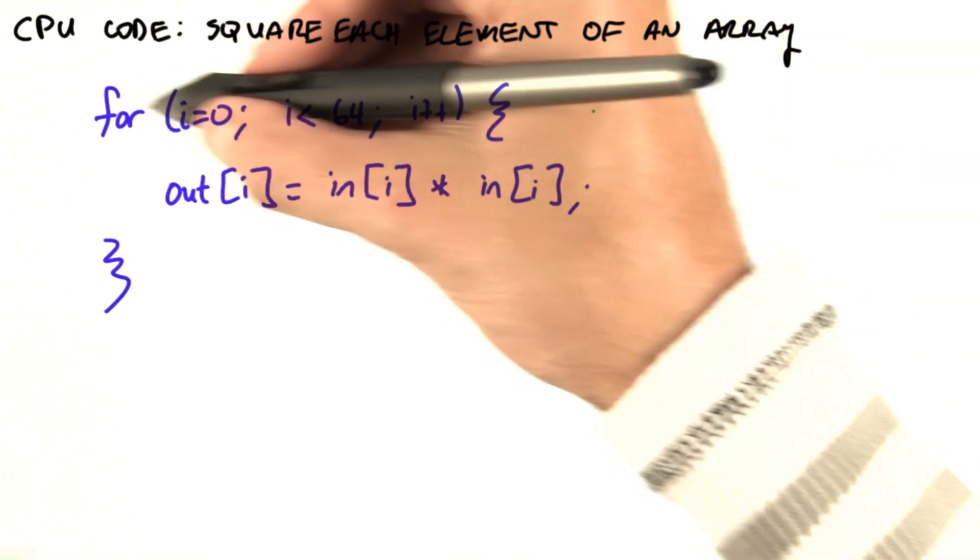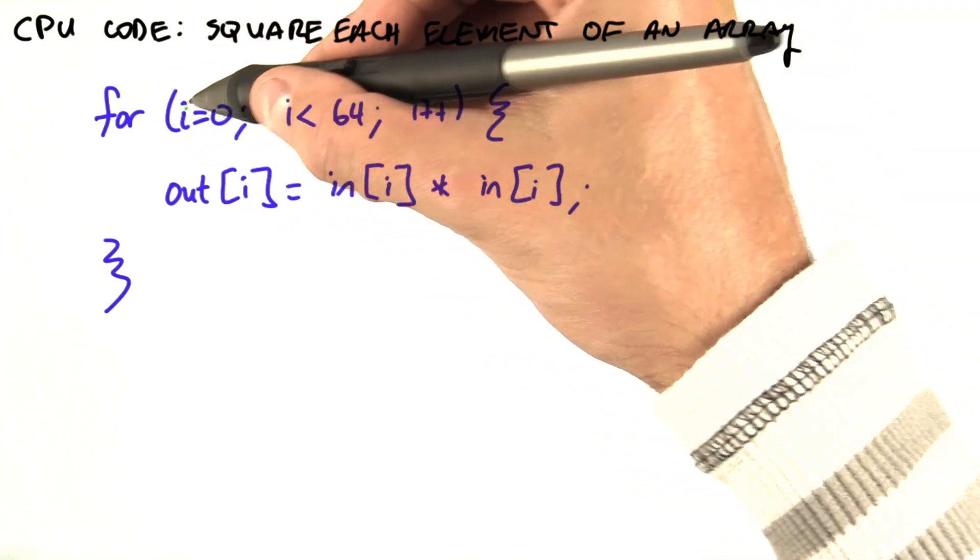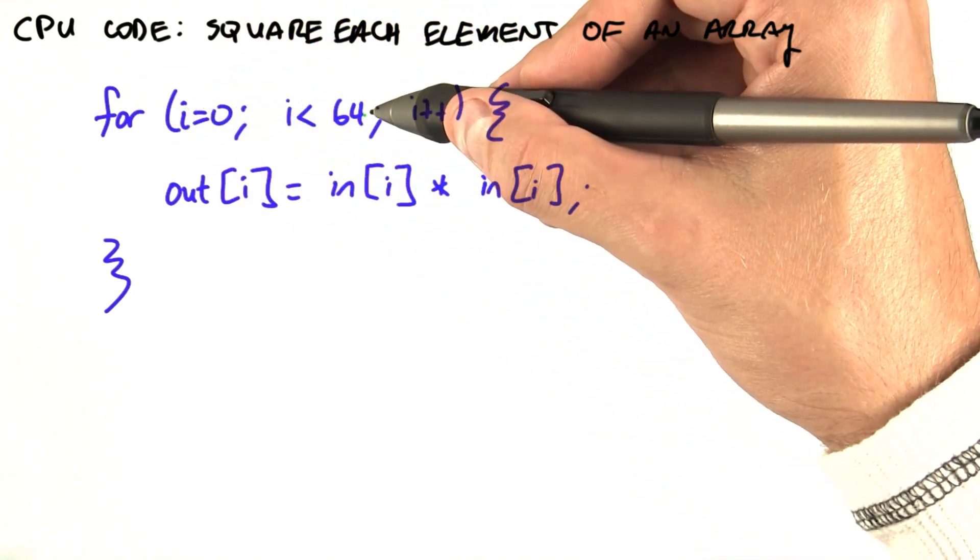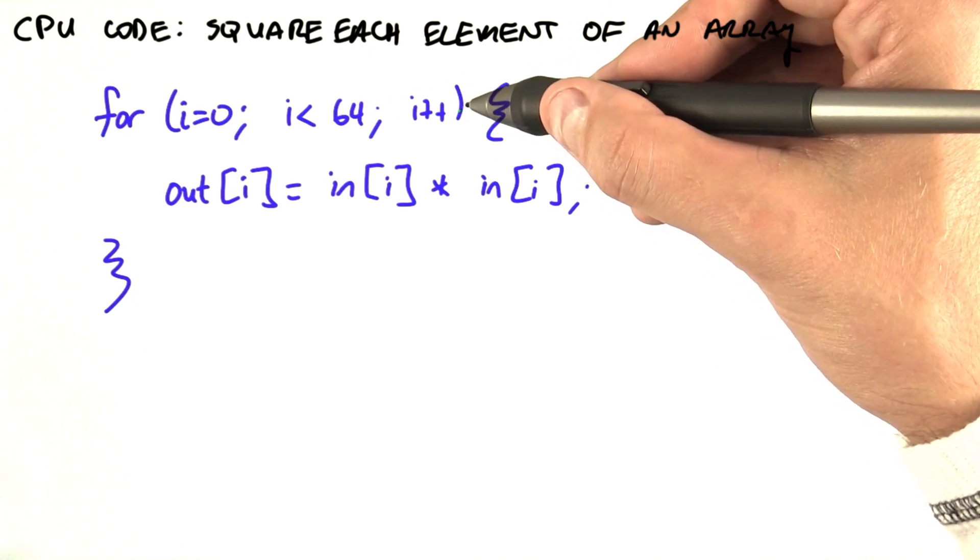The first line is setting up the loop. We're going to loop from i equals 0 until i equals 63, incrementing i each time we walk through the loop.